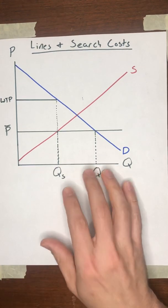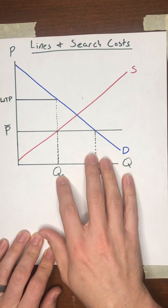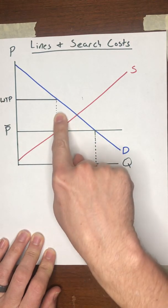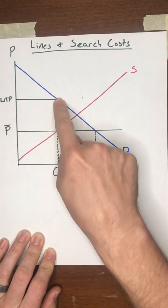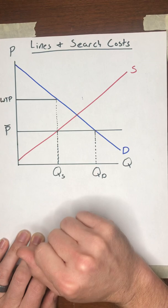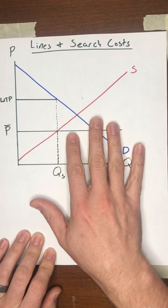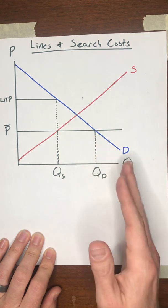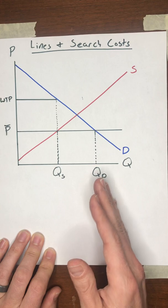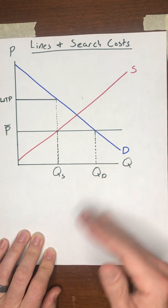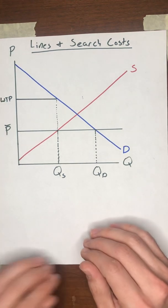In the last video, we talked about how a shortage from a price ceiling can result in bribes and black markets that push the price that buyers pay to the sellers up to this willingness to pay on the last unit QS. That is one possibility. Another possibility, though, is that buyers won't compete with each other by trying to bribe the sellers, but instead they'll compete with each other by showing up early to the stores, waiting in long lines, spending a lot of time searching for the product.